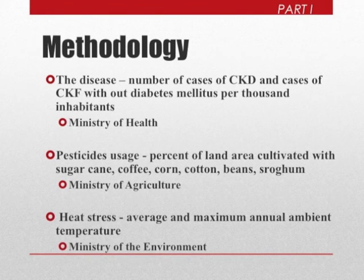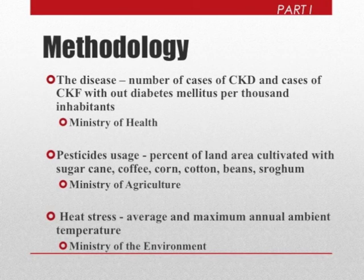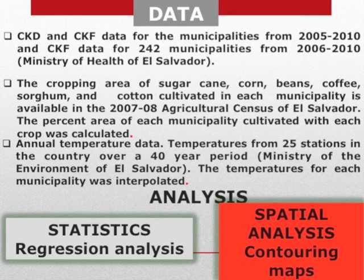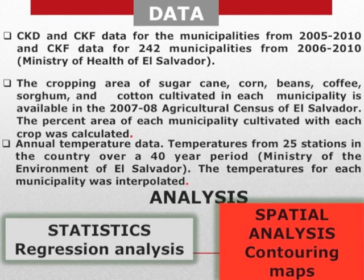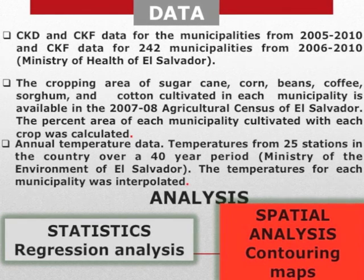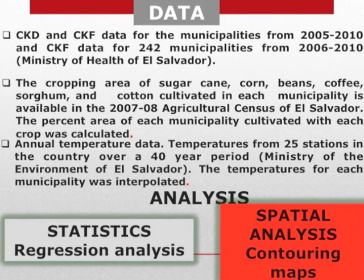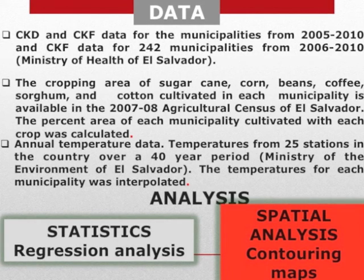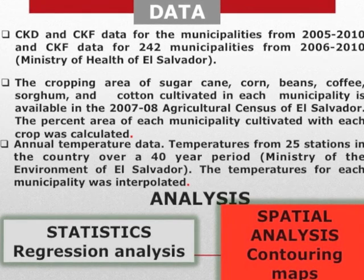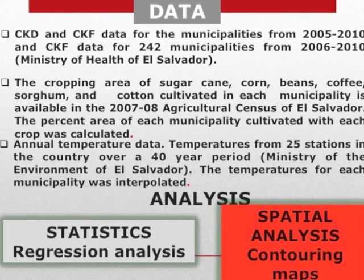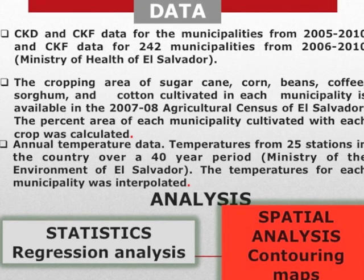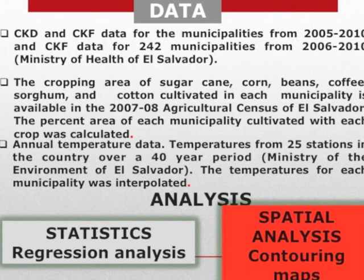Heat stress can also be correlated, and we obtained maximum and average annual temperature information from the Ministry of the Environment. The methodology included obtaining data for 243 municipalities in El Salvador for CKD and CKF, provided by the Ministry of Health. Cropping area for sugarcane, corn, beans, coffee, sorghum, and cotton was obtained from the 2007-2008 Agricultural Census of El Salvador. Maximum and average annual temperatures were obtained from 25 weather stations recorded over a period of 40 years. This information was used for statistical regression analysis and to construct maps to compare and identify correlations with kidney disease.